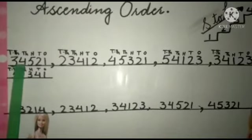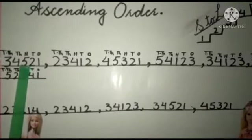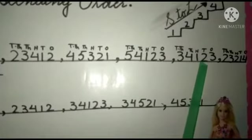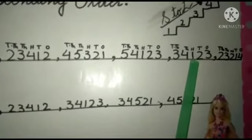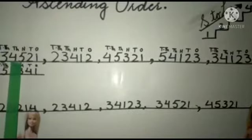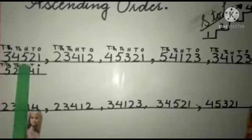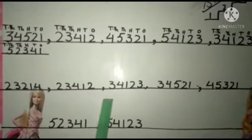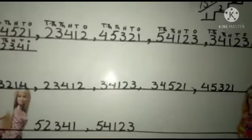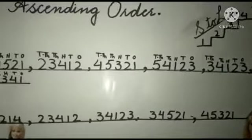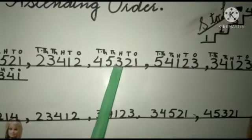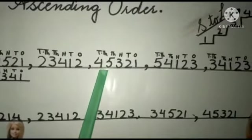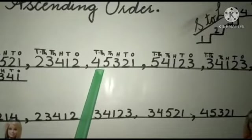After this, we are going to compare both numbers of the same value: 34,521 and 34,123. You can see 100 is smaller than 500, so we will write the number with the smaller place value first. The next number is 45,321 — there is only one number with this value, so we are going to write 45,321 as it is.